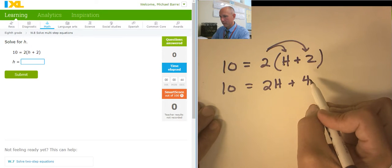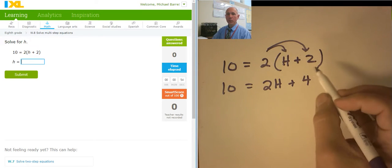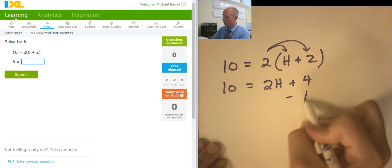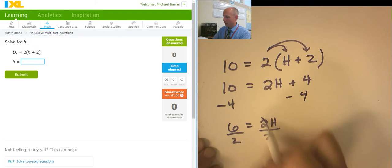I feel like I skipped. I'm making a video right now. Come on, Mr. Barr. All right, so there's my distribution. What would you like to do? I'm going to subtract 4 from both sides. It's going to give me 6 equals 2h. Then I'm going to divide both sides by 2. So h equals 3.